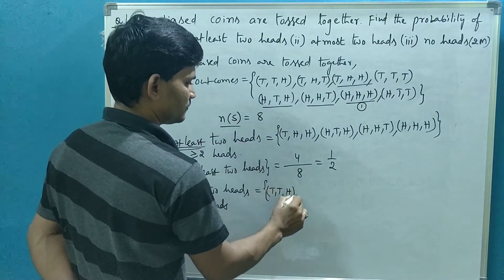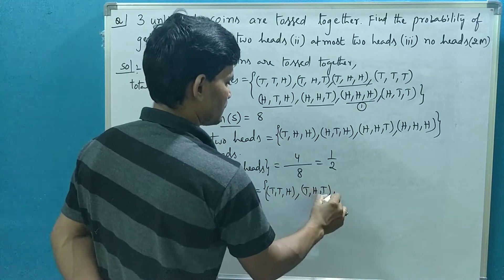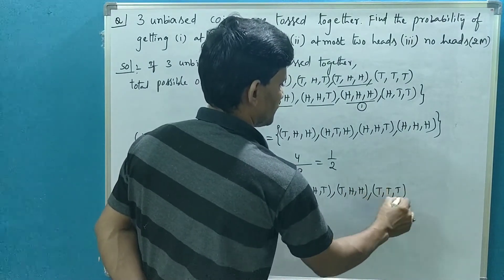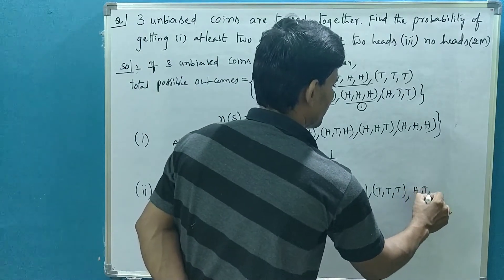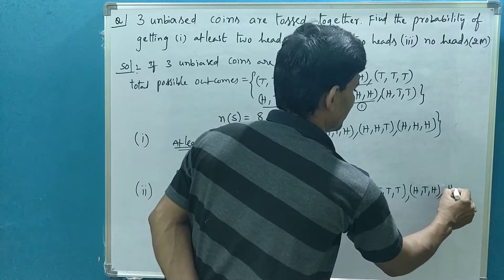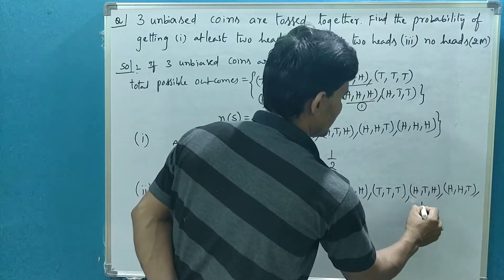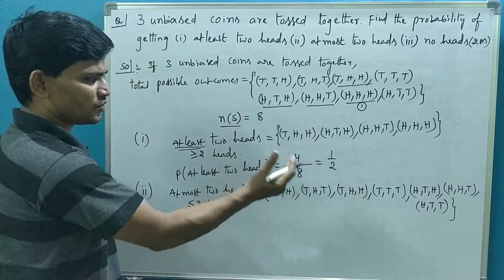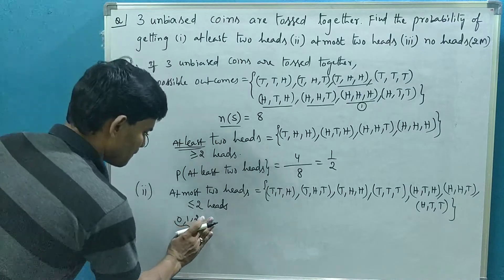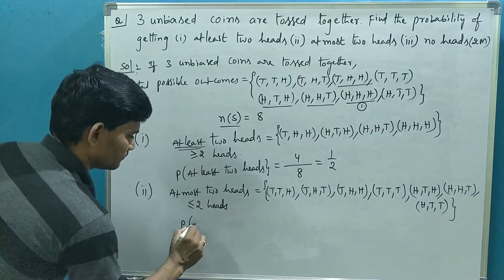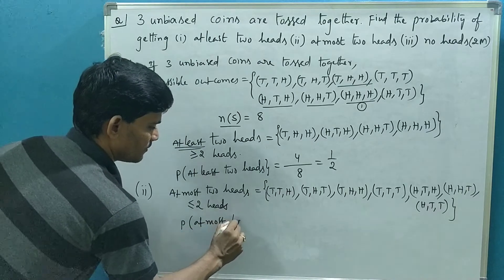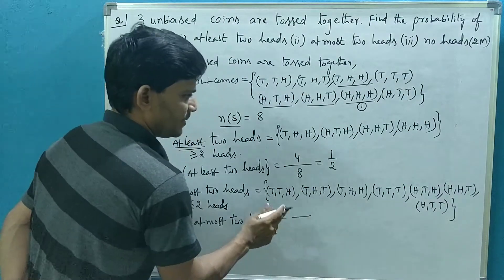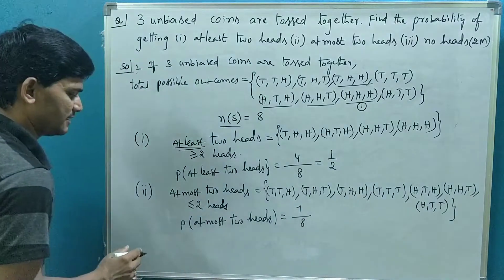The only one possibility having more than two heads is HHH only. Remaining all are having two heads or less than two heads. So our favorable outcomes consist of all remaining seven except this one. These are the seven outcomes which contain at most two heads. So probability of at most two heads equals seven out of eight.